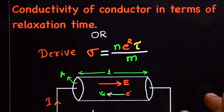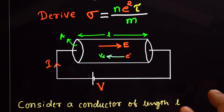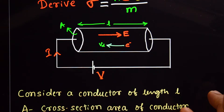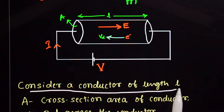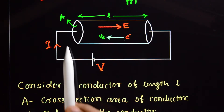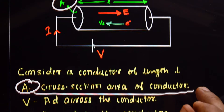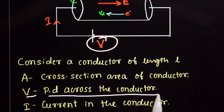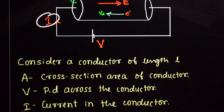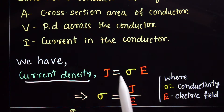This is a five-mark topic. Draw the diagram first. Consider a conductor whose length is L and area of cross-section is A. V is the potential difference across the ends of the conductor, and I is the current in the conductor.